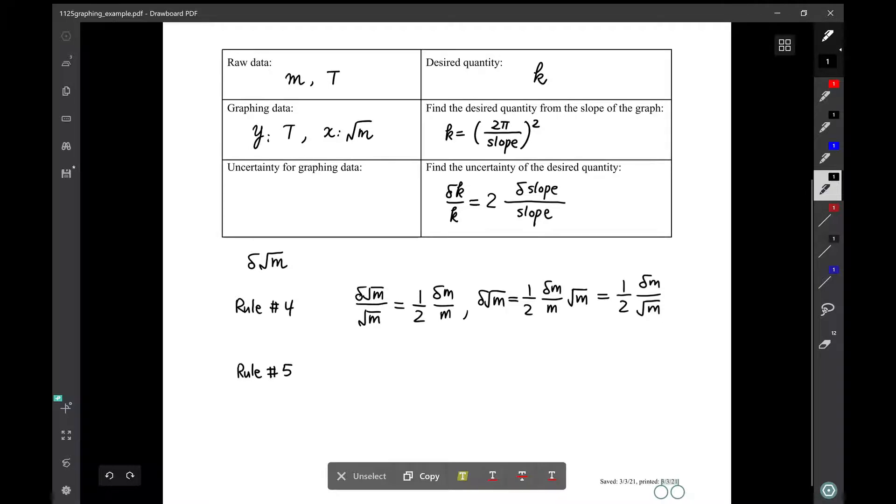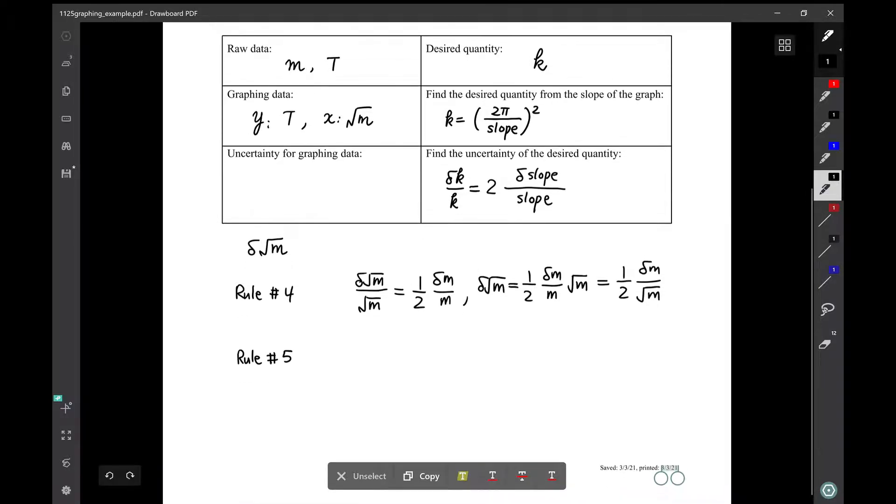Another way to find out δ√m is to use rule number 5, which is the rule that we rarely used before. If you use that, δ√m, that will equal to the derivative, which is d(m^(1/2)) over dm. That's the derivative times δm. If you look up rule number 5, that is the application of rule number 5. So take the derivative. The derivative would be a half m^(-1/2).